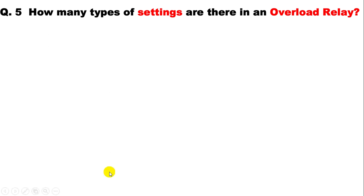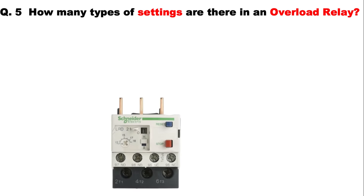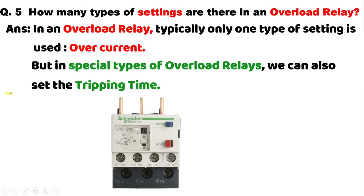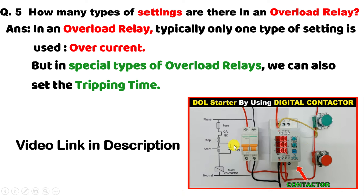Since we are talking about overload relays, here is a related question that was asked to me in my interview: in an overload relay, how many types of settings can we do? In a normal overload relay, only one type of setting option is there — you answer that in an overload relay, mostly one type of setting is done, which is overcurrent. But in a special type of overload relay, there is also an option to set tripping time.